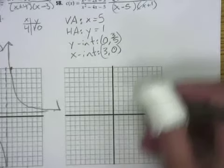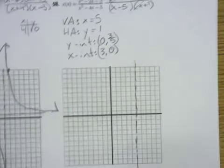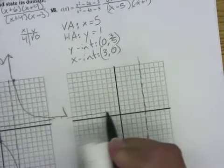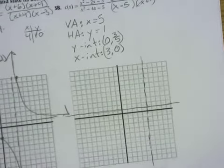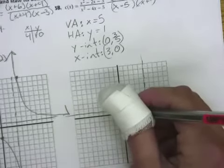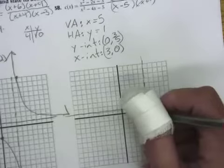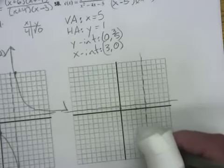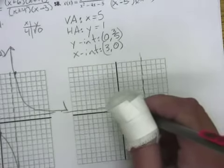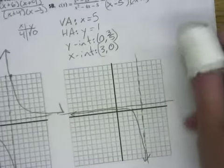And let's take what we have and plot it on our graph and see where things fall. Vertical asymptote 1, 2, 3, 4, 5 here. Horizontal asymptote here. Y intercept at 3 fifths. So, just under that line. X intercept at 3 comma 0. And those two points give us enough information about this part of the graph.